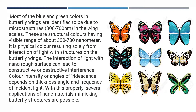Most of the blue and green colors in butterfly wings are identified to be due to microstructures ranging from 300 to 700 nanometers in the wing scale. These are structural colors having a visible range of about 300 to 700 nanometers — physical colors resulting solely from interactions of light with structures on the butterfly wings. The interaction of light with nano-rough surfaces can lead to constructive or destructive interference. Color intensity or angle of iridescence depends on thickness, angle, and frequency of incident light. Several applications mimicking butterfly structure are now possible.